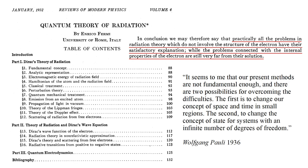In 1936, Pauli's opinion was: it seems to me that our present methods are not fundamental enough, and there are two possibilities for overcoming the difficulties. The first is to change our concept of space and time in small regions. The second, to change the concept of state for systems with an infinite number of degrees of freedom.